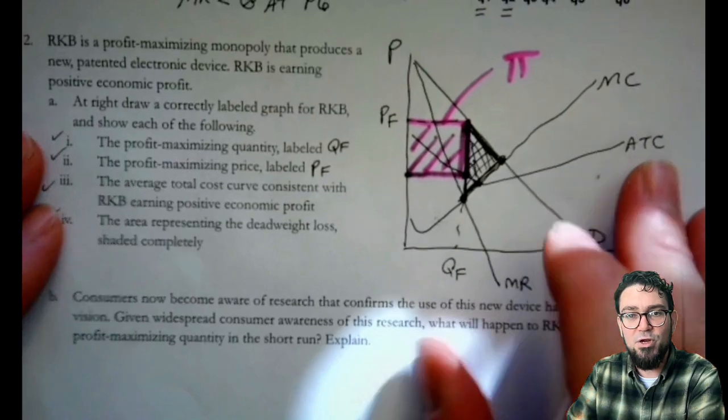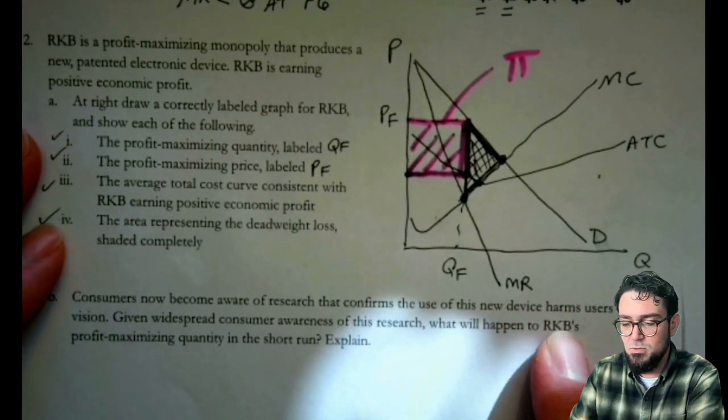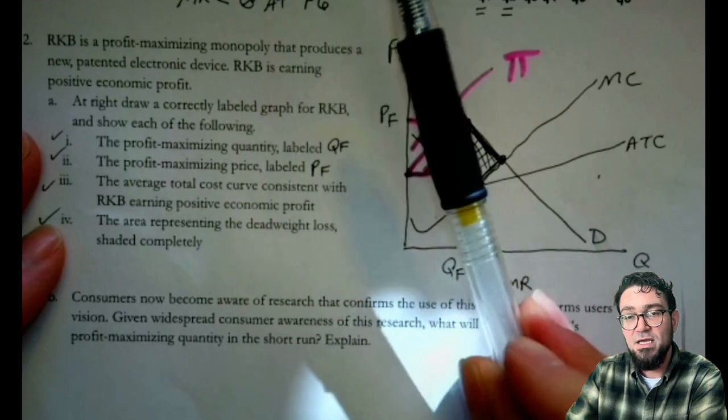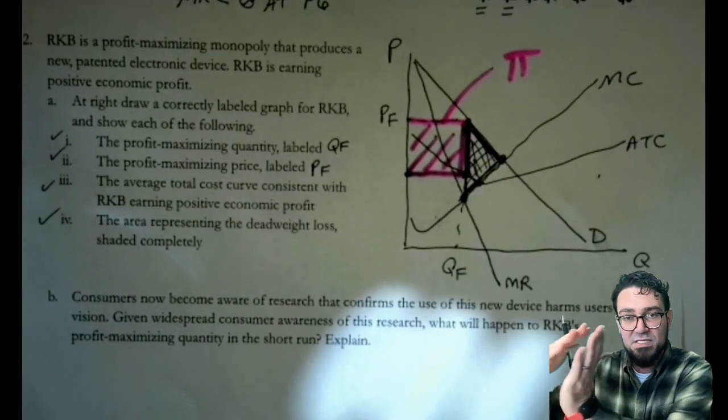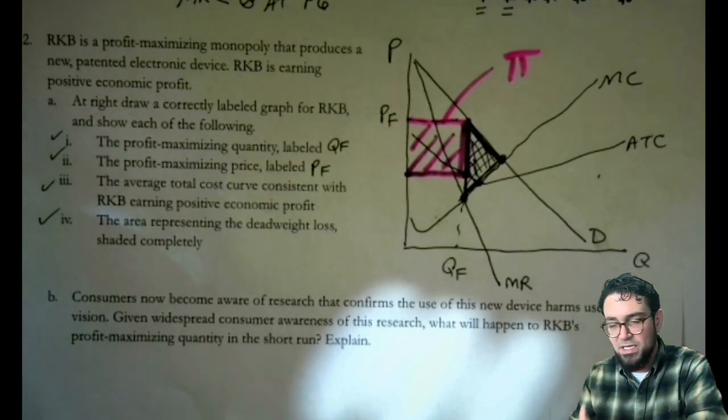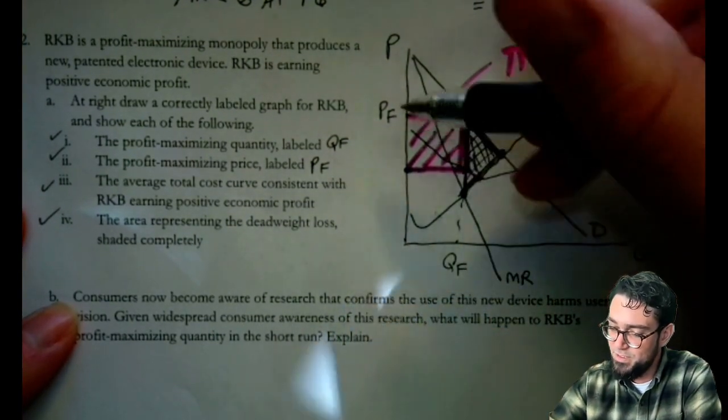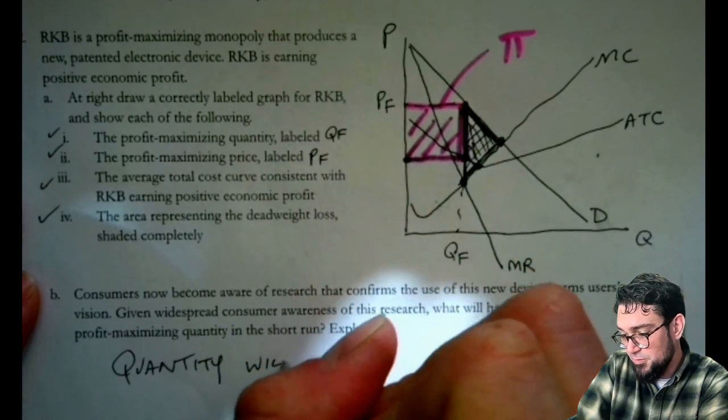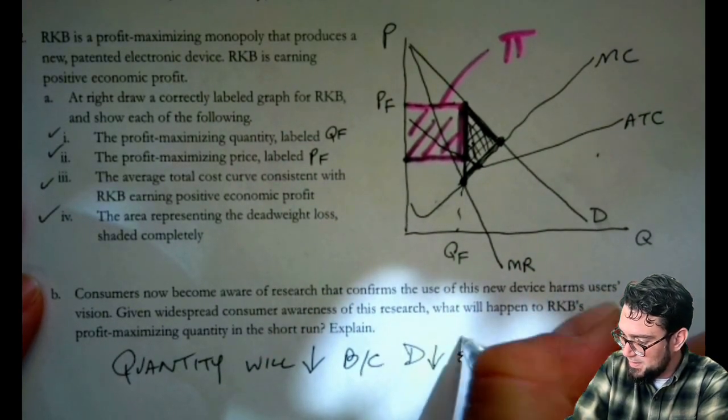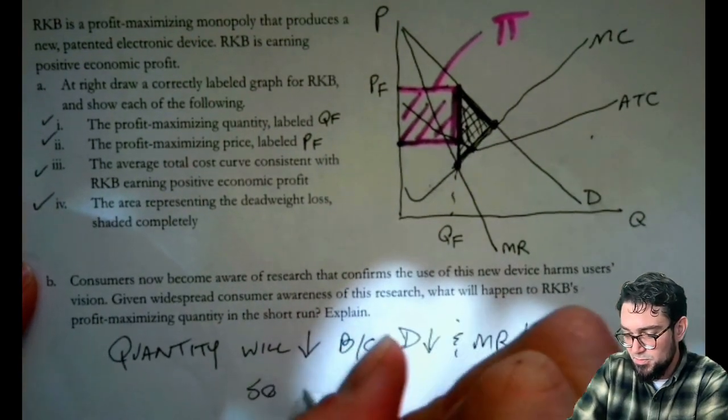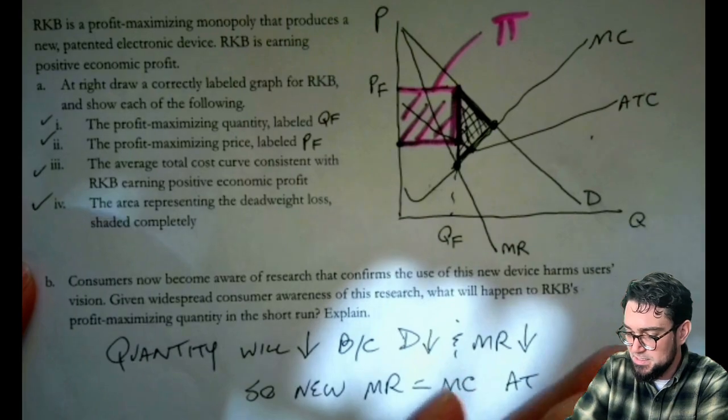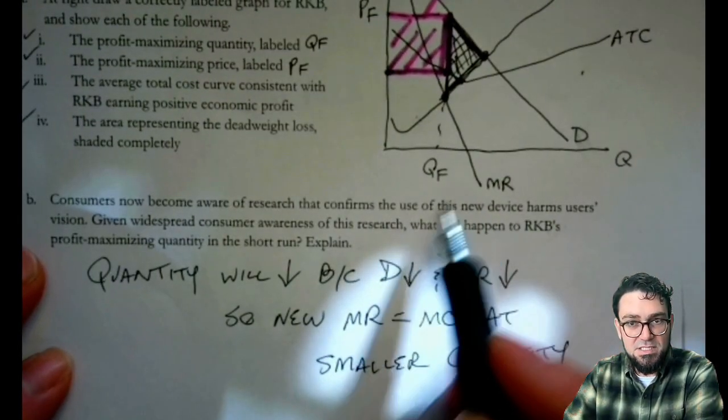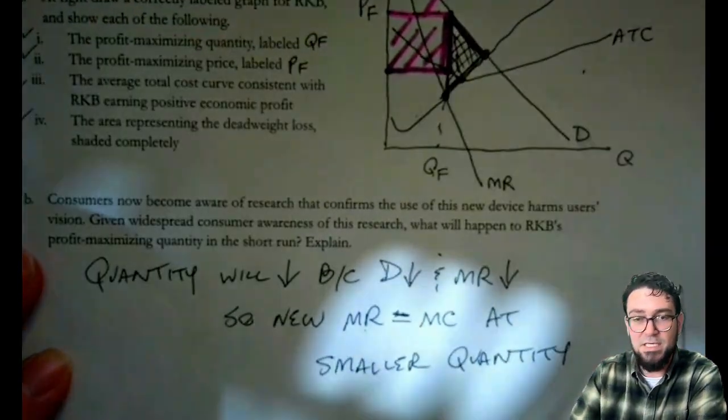Now the next part says consumers now become aware of research that confirms the use of this device harms users' vision. Given widespread consumer awareness, what will happen to RKB's profit maximizing quantity in the short run? Well, we know that if people don't want to buy it, then the demand curve is going to shift to the left. That's also going to cause the marginal revenue curve to kind of shift inward as well. They'll move simultaneously. And because there would be a smaller MR value, the new intercept is going to be at a smaller quantity. So we would say that their quantity will decrease because demand and marginal revenue decreased. So new MR equals MC at a smaller quantity. And that's enough to say here that we understand that there's a smaller demand and that's going to decrease the marginal revenue. And that's going to cause the new MR equals MC to be at a smaller quantity.